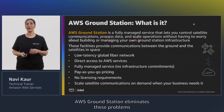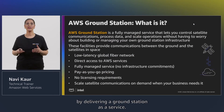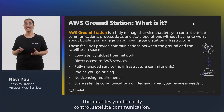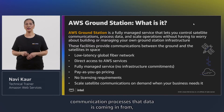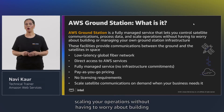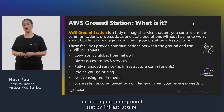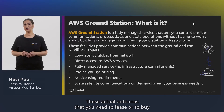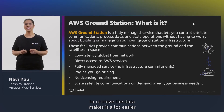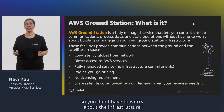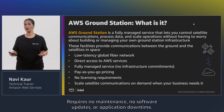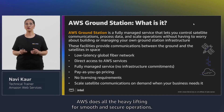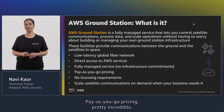AWS Ground Station eliminates these problems by delivering a ground station as a service, enabling you to easily control satellite communication. It's a fully managed service that lets you control satellite communication and process incoming data, scaling your operation without having to worry about building or managing your own ground station infrastructure. You don't have to lease or buy the actual antennas needed to retrieve data. It requires no maintenance, no software updates, and no application downtime. AWS does all the heavy lifting for smooth and secure operations.